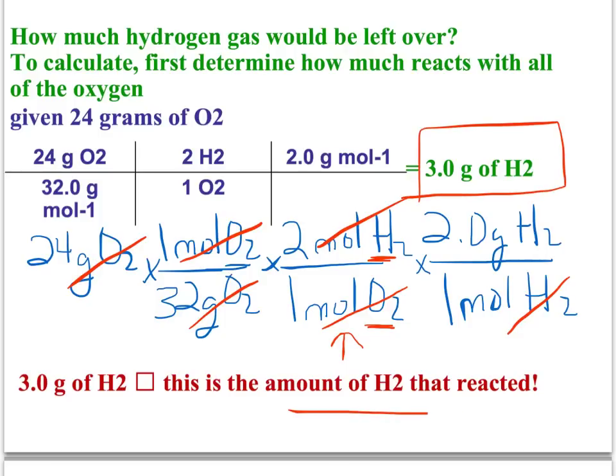This is the amount of hydrogen that was reacted. Reacted means it was used. So this is not our final answer. That just tells us how much we use. So we have one more step.